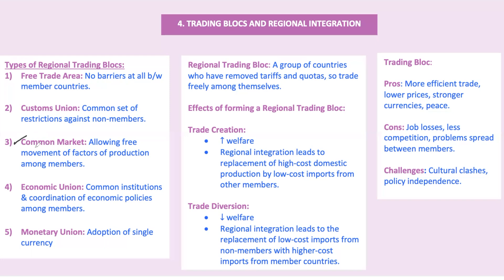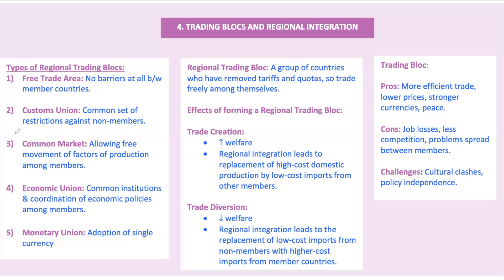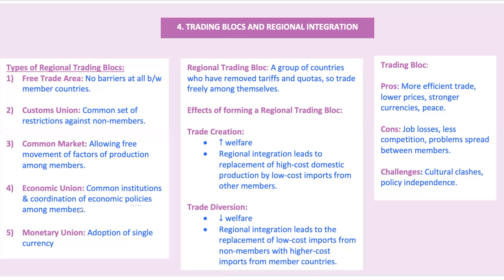A common market includes all the perks of a customs union plus the freedom to move labor and other production factors among members, allowing for the free movement of goods, services, capital, and labor. One classic example is Mercosur, which includes Argentina, Brazil, Paraguay, and Uruguay. An economic union includes a common market and extends further by coordinating economic policies among member countries, combining everything a common market offers with coordinated institutions. The European Union is the poster child here, with common institutions and policies that guide economic governance.